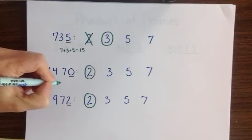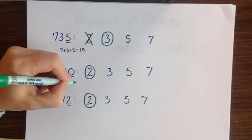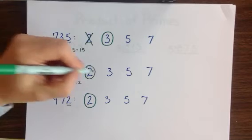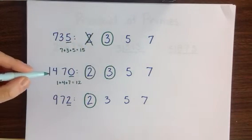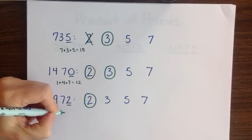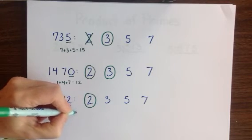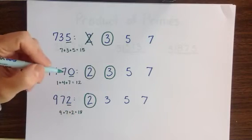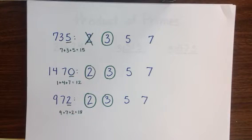Doing the same thing here for 1470, we add 1 plus 4 plus 7, and our result is 12. 12 again is a multiple of 3, so therefore 1470 is a multiple of 3. And then our final example, 9 plus 7 plus 2 equals 18, and 18 being a multiple of 3 tells us that 972 is also a multiple of 3.